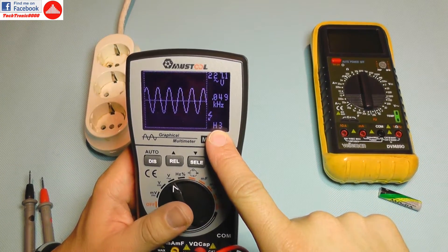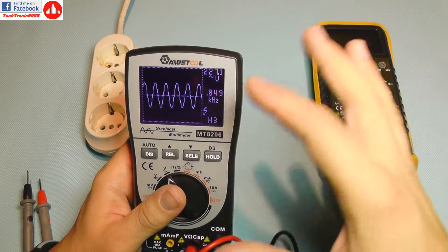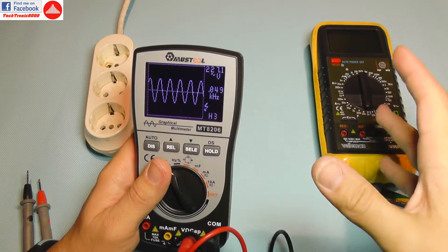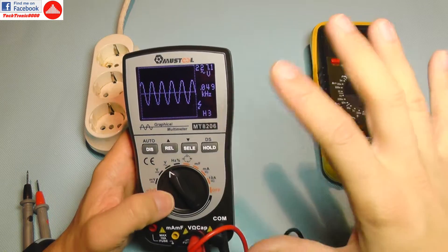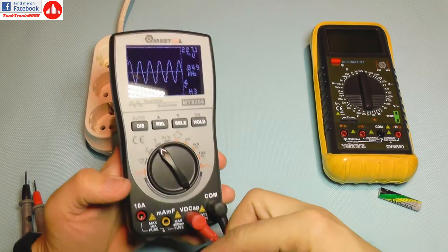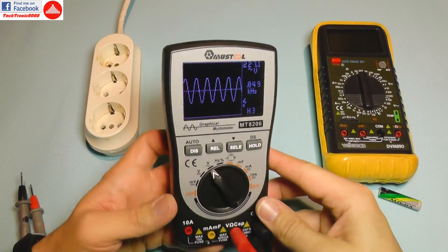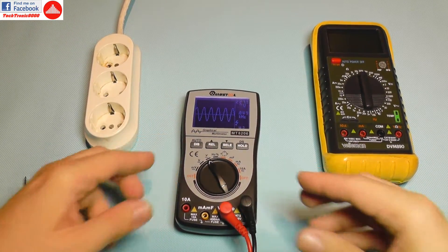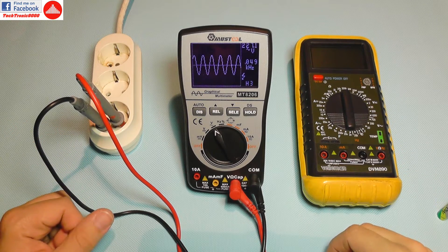You also have this hold function which will hold the graphic and save it into a memory slot. It has something like 20 memories or something like that, and you can delete them, you can create a new one. Very, very smart and actually very cheap for having an oscilloscope in your toolbox. I find this priceless. So until my next video, see you and bye bye.